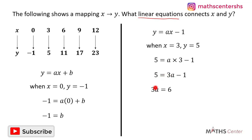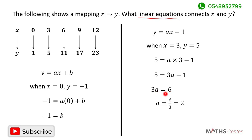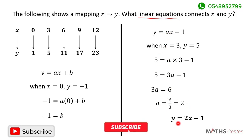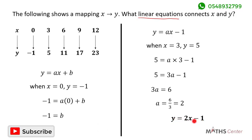Grouping like terms: 5 plus 1 gives us 6, so 3a is equal to 6. Dividing both sides by 3 gives a is equal to 6 divided by 3, which is 2. So the value of a is 2. Replacing a with 2, the equation becomes y is equal to 2x minus 1. This is the rule of the mapping — the linear equation that connects x and y.